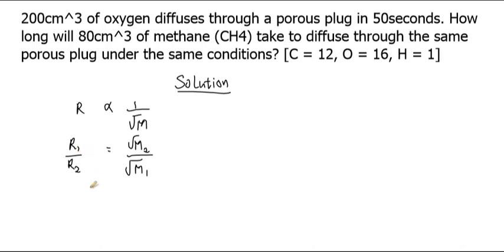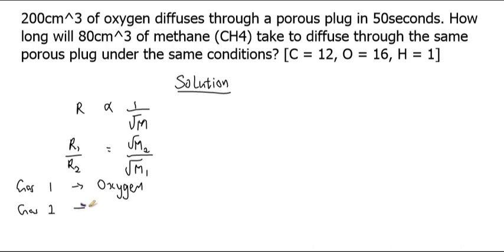The first gas — gas one, subscript 1 — will be standing for oxygen. The second gas — gas two, subscript 2 — will be methane. So now the next thing to do is to determine the rate of diffusion of each of the gases, as well as the molecular mass.